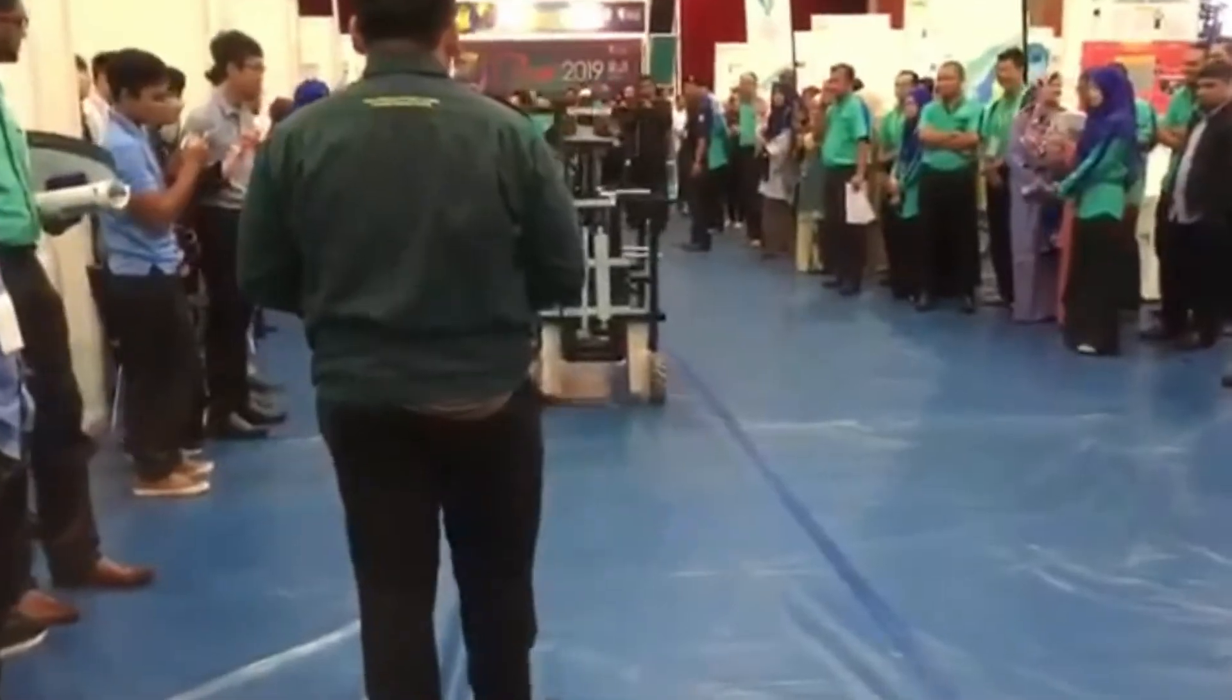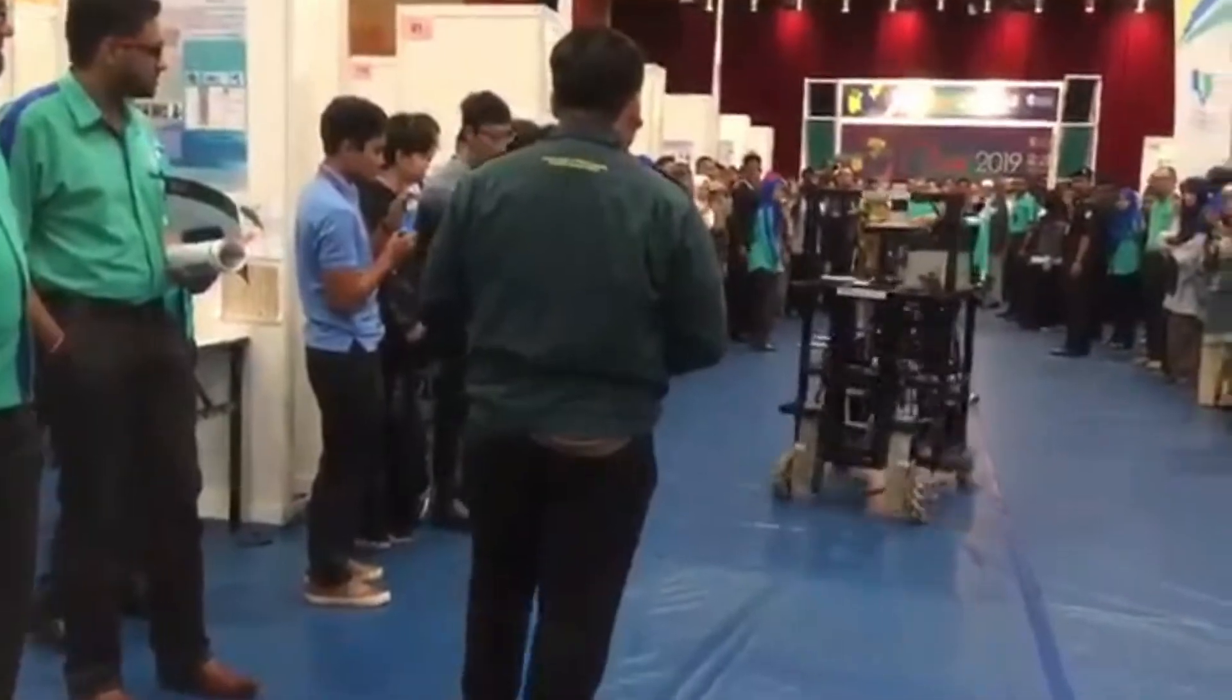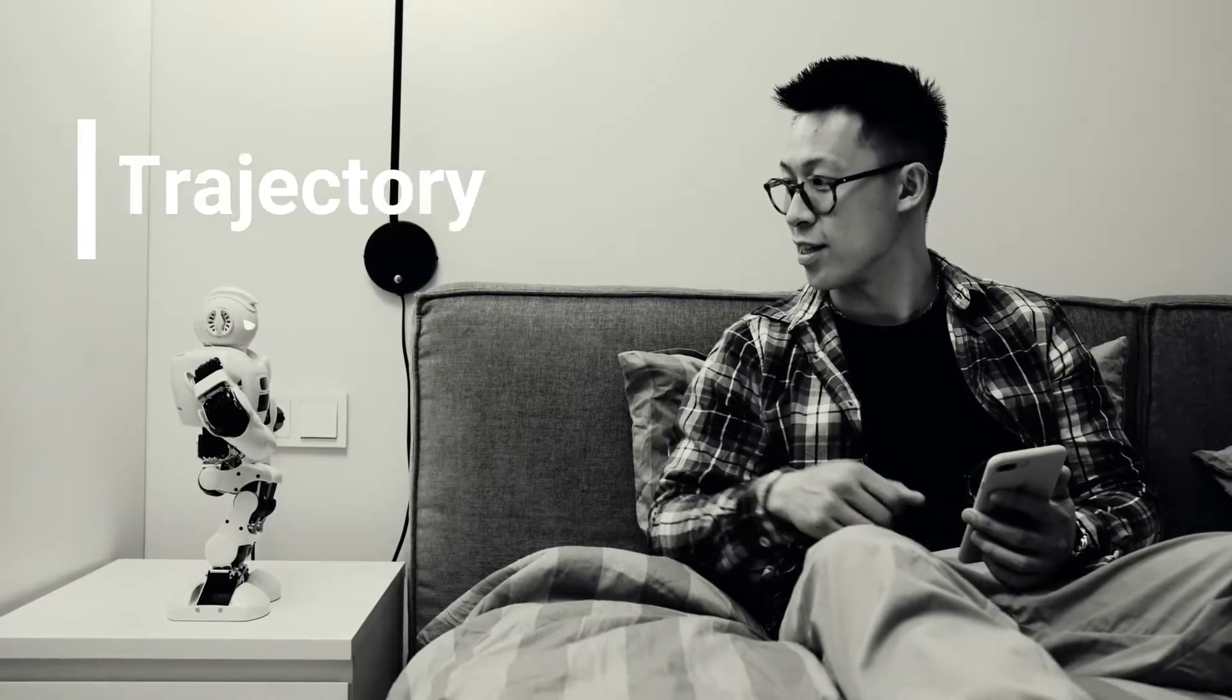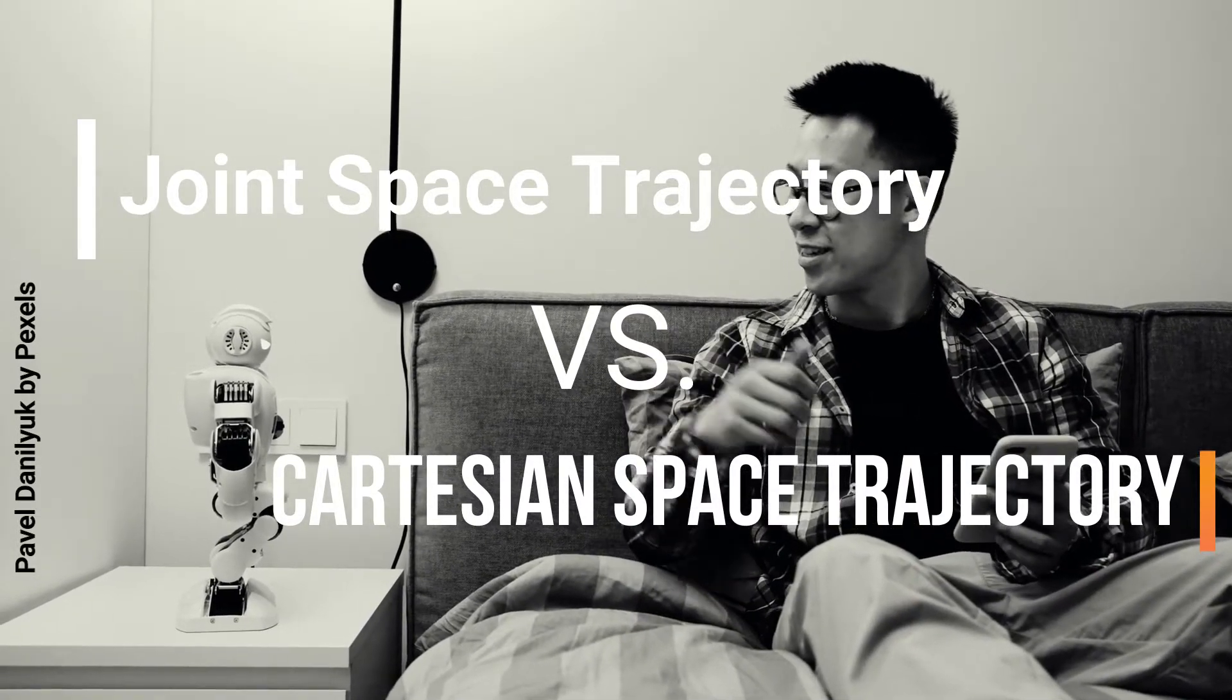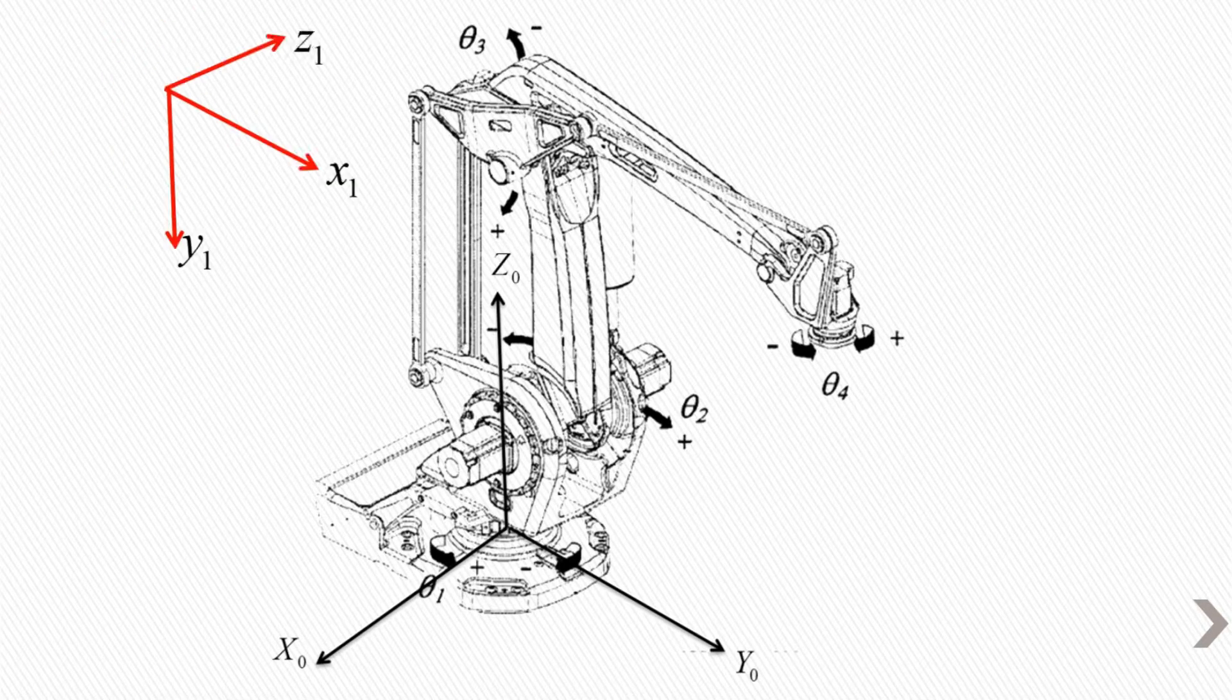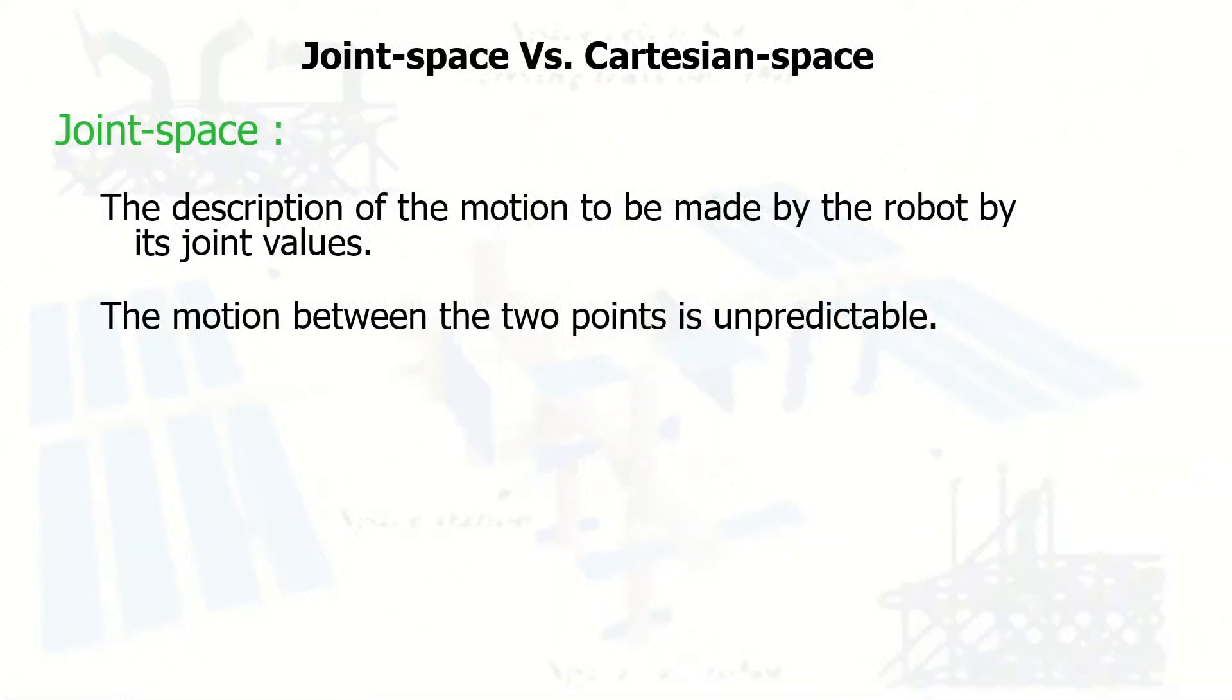In trajectory and path planning of the robots, they also have two different terms: joint space and Cartesian space. In robotics we have joint space according to each joint of the robots, and the Cartesian space which is according to the XYZ factors for each joint.